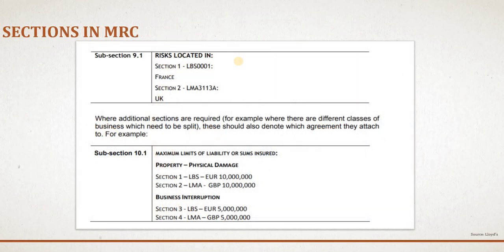This is how the MRC looks when it covers risk from both EEA and non-EEA, such as France and the UK. It will have two sections — for example, within the property section, there will be two subsections: one for EEA risk and one for non-EEA risk. This is how the MRC is going to separate and show the information from the EEA and non-EEA zones.